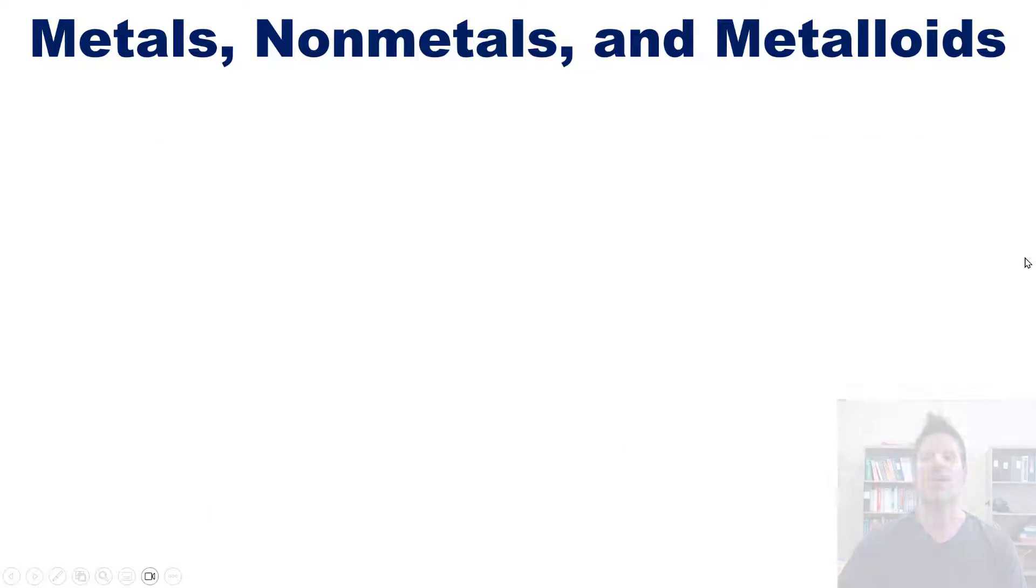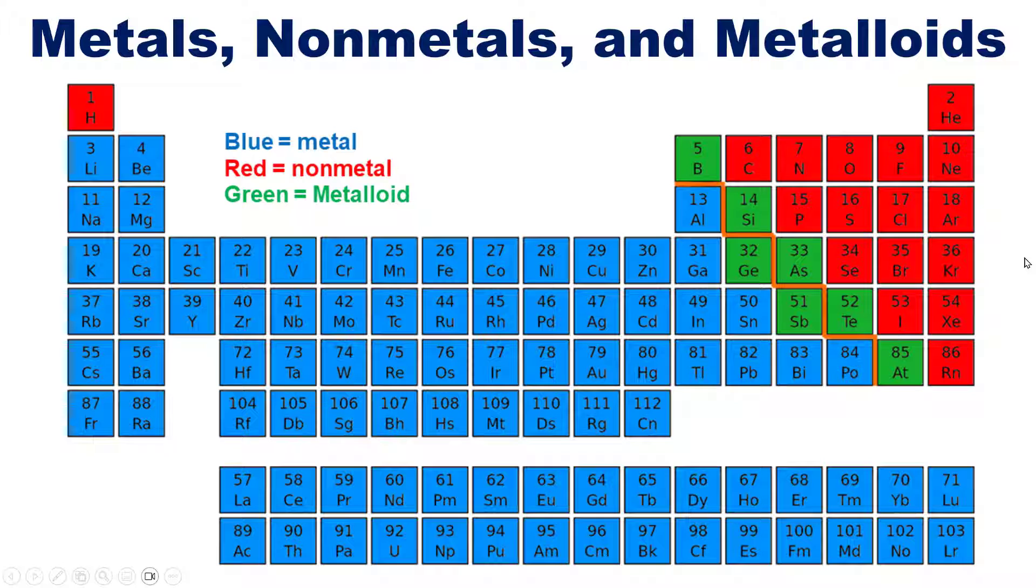As a quick reminder, this periodic table is colorized to show you which elements are metals, which ones are nonmetals, and which ones are metalloids. As you can see, most of the elements are metals. The nonmetals are the red colorized ones up here, as well as hydrogen, and the metalloids are a very small number of elements that traverse the two.